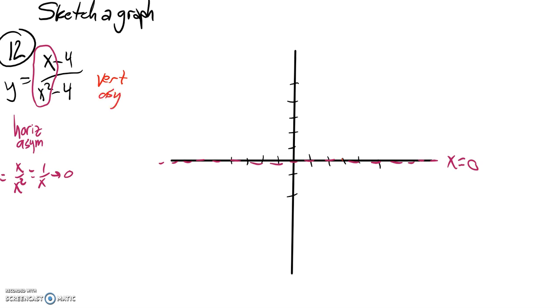Vertical asymptotes happen, they're straight up and down. It's when I try to divide by 0. Vertical asymptotes happen when that equals 0. And notice that factors to x plus 2 times x minus 2. So here's one of them here.